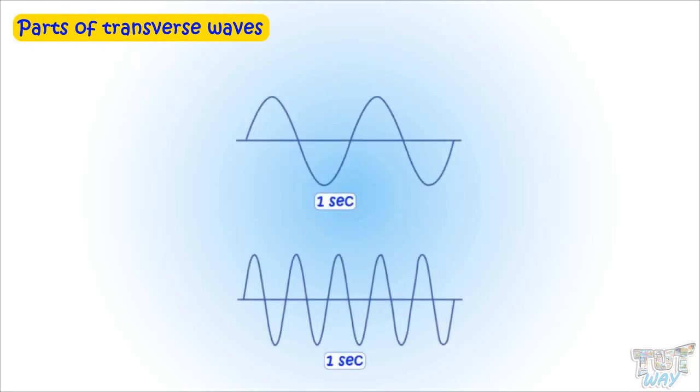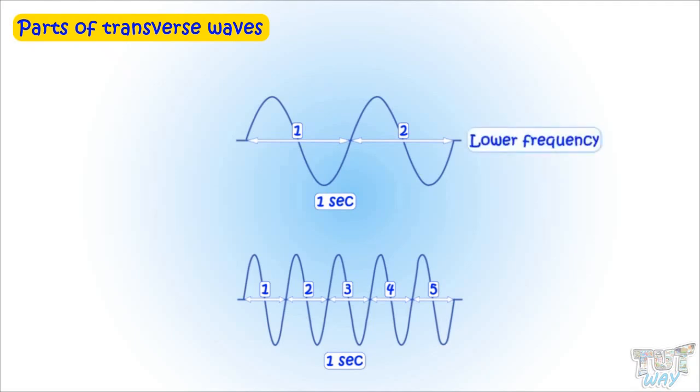Let's see two different transverse waves produced in one second. Here we have two transverse waves produced in one second. In the first wave, only two waves are there. And in the second wave, we can see there are many wavelengths. Let's count. Here we have five wavelengths produced in one second. So the first one has lower frequency, then the second one has more frequency.